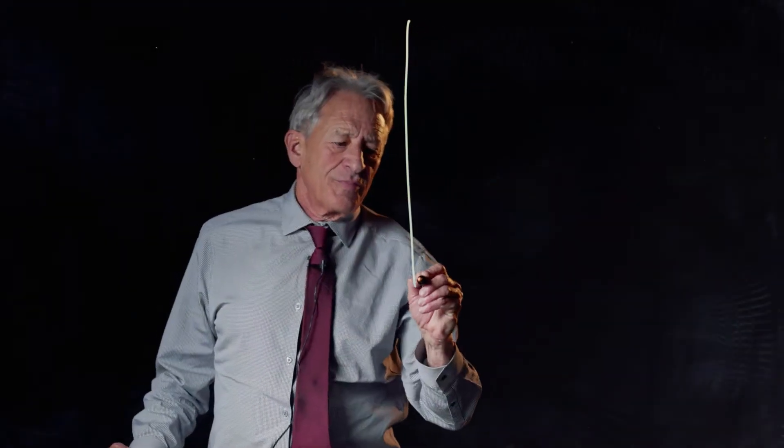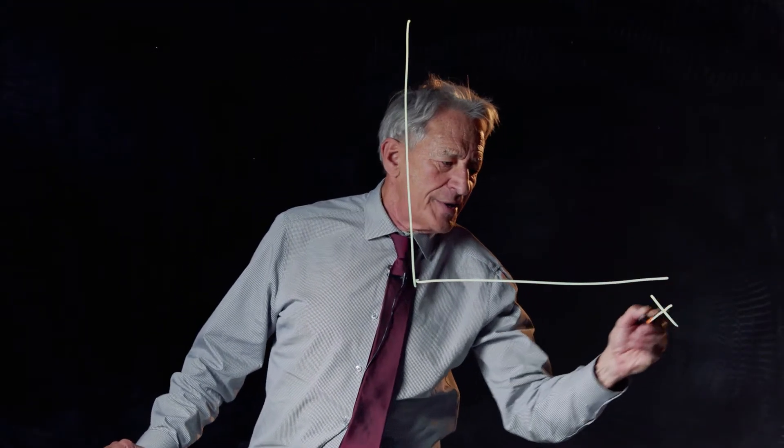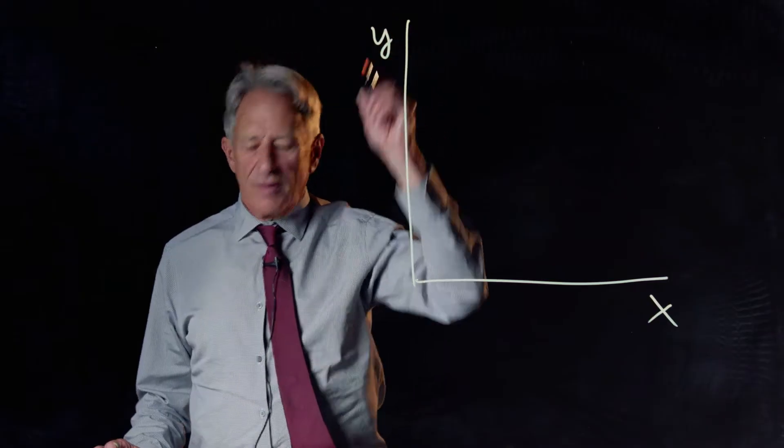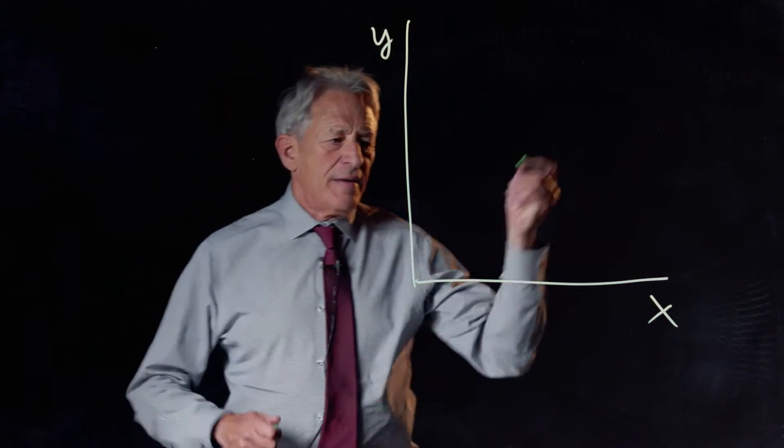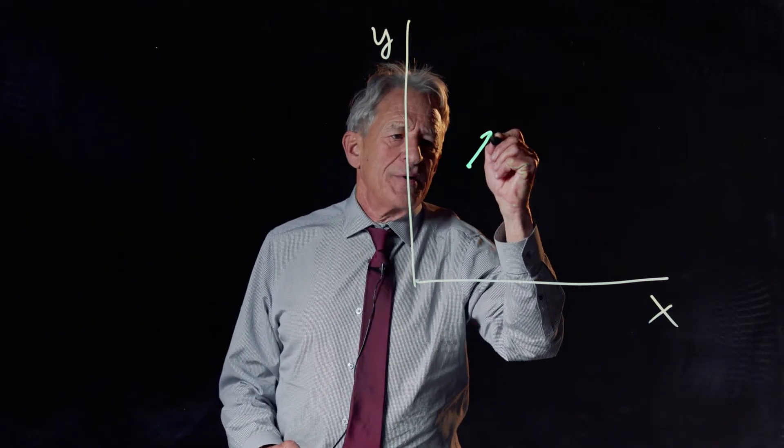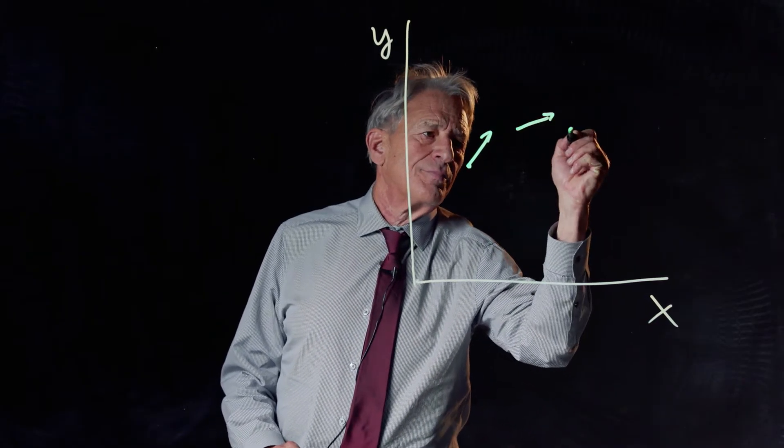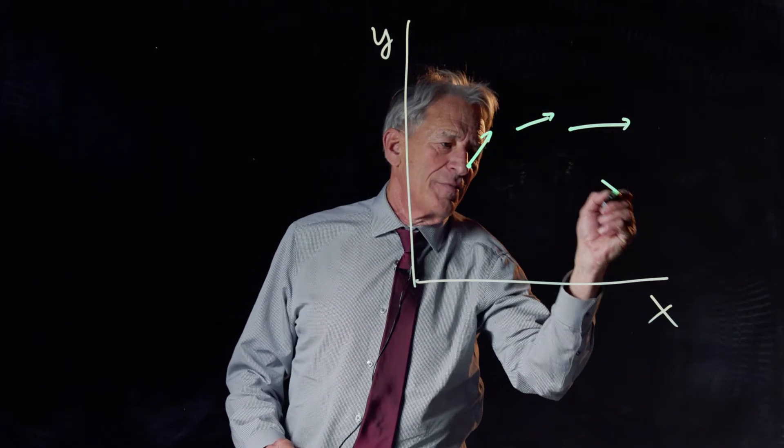We've said that we have this big old state space, that at every point in state space we have a change arrow. I'm just drawing three or four of them.